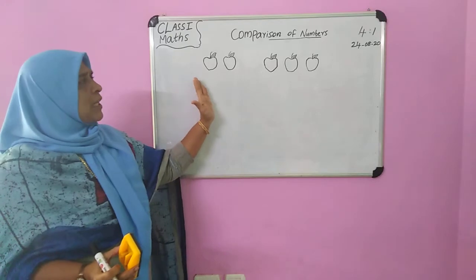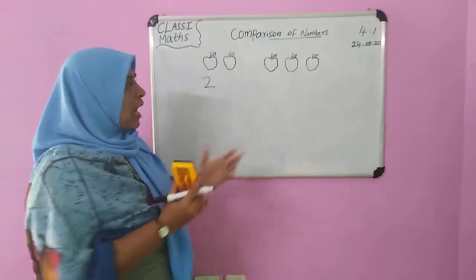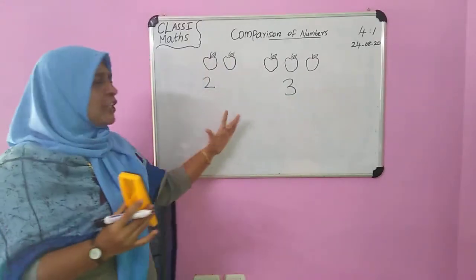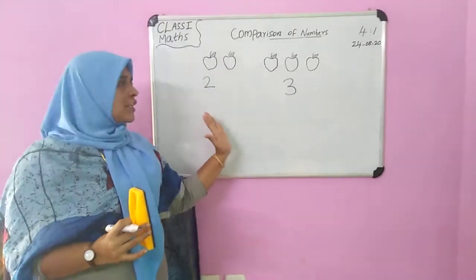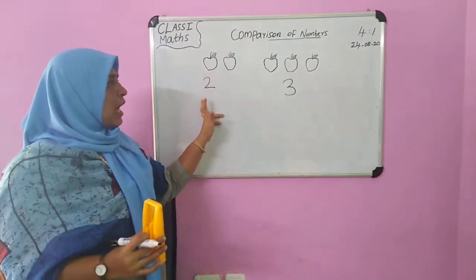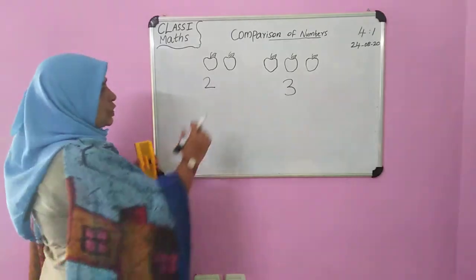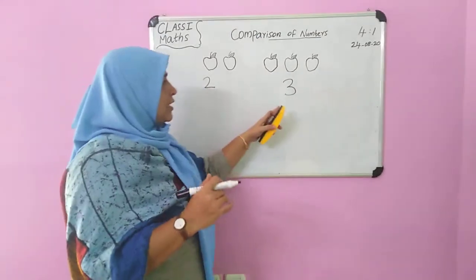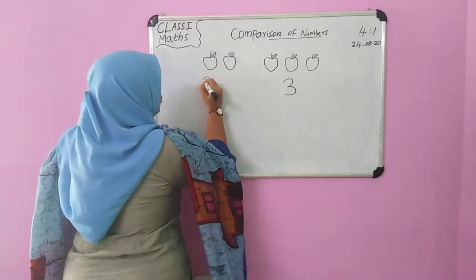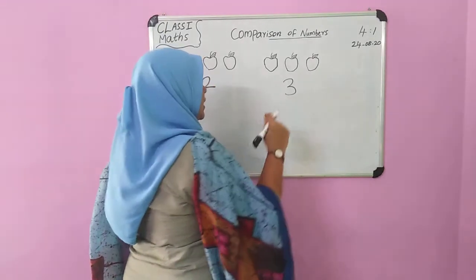How many apples here? Two apples. How many apples here? Three apples. Which one is the greater number and which one is the lesser one? Here: one, two — two apples. Here: one, two, three — three apples. Two is smaller, and three is the greater number.